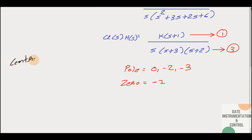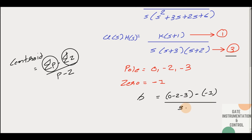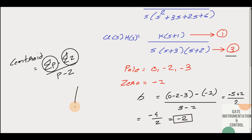The centroid formula is: σ = (sum of real parts of poles − sum of real parts of zeros) / (number of poles − number of zeros). So σ = (0 − 2 − 3) − (−1) all divided by (3 − 1) = (−5 + 1) / 2 = −4 / 2 = −2.